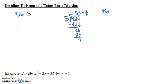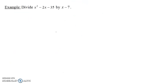How do we divide polynomials? How do we do x squared minus 2x minus 35 divided by x minus 7? We're going to use the same technique — long division. In another video, we'll talk about synthetic division, which is a quick, streamlined way of doing long division.